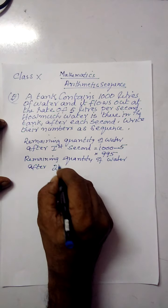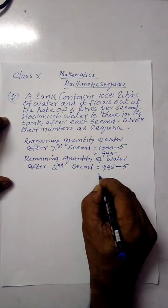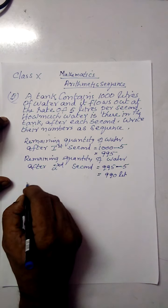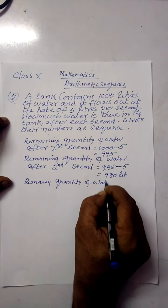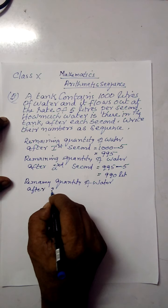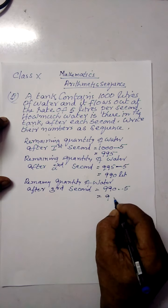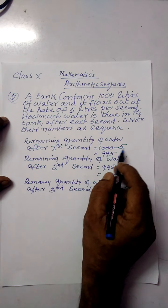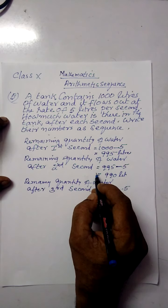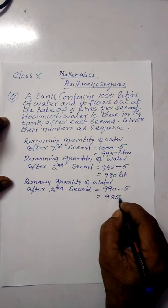After the first second: 995 liters. Remaining quantity of water after the second second: 995 minus 5 equals 990 liters. Then remaining quantity of water after the third second: 990 minus 5 equals 985 liters. So first second gives 995, second second gives 990, third second gives 985.